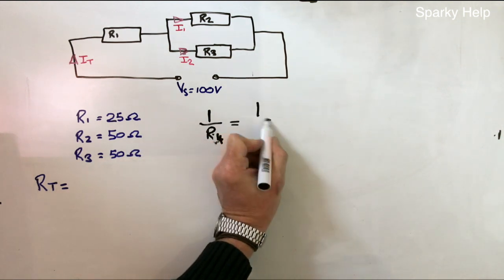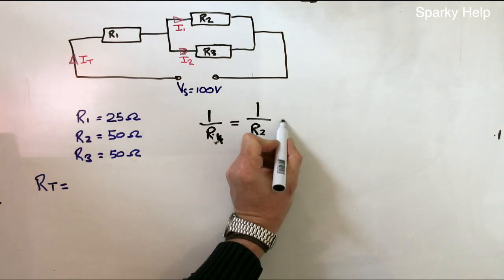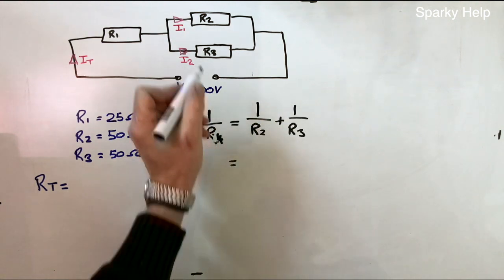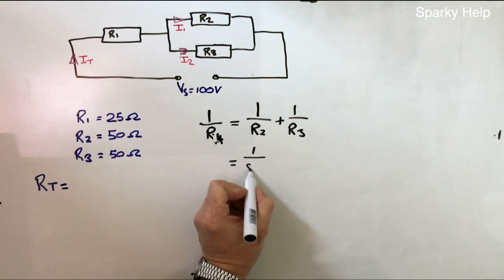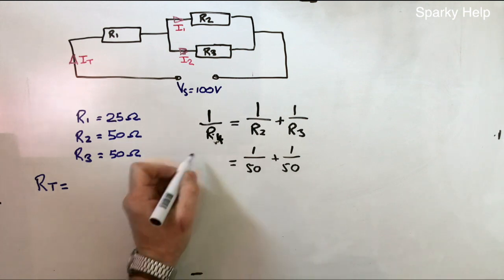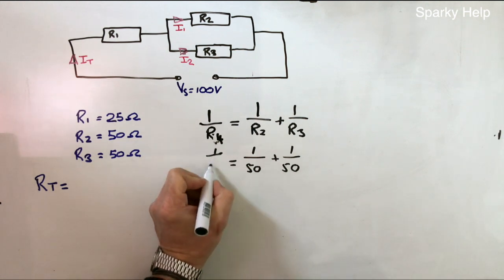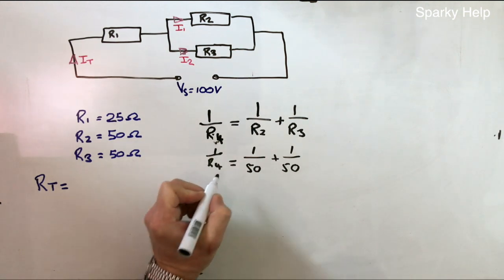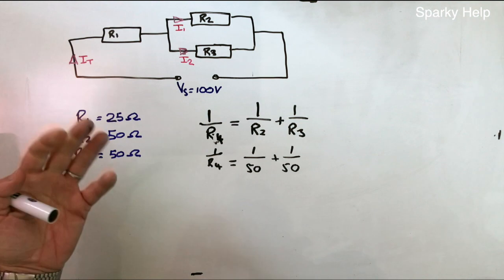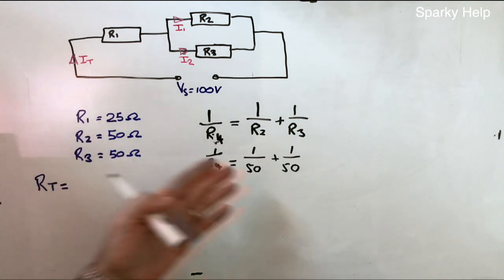So it becomes 1 over R2 plus 1 over R3. We put the figures in, like so. This we can do on our calculator. It can be done a lot easier, I know, because of the figures I've chosen.